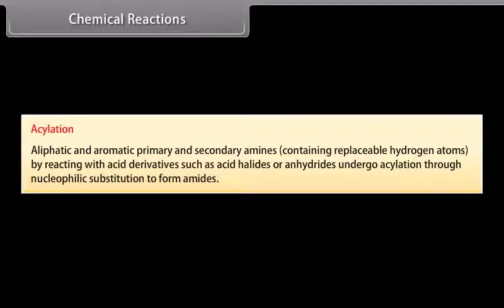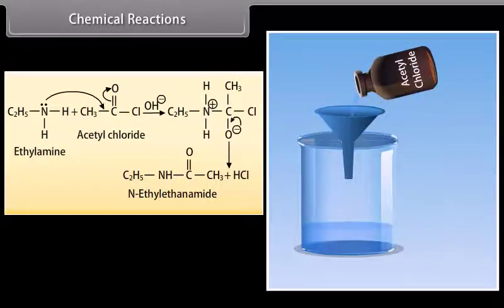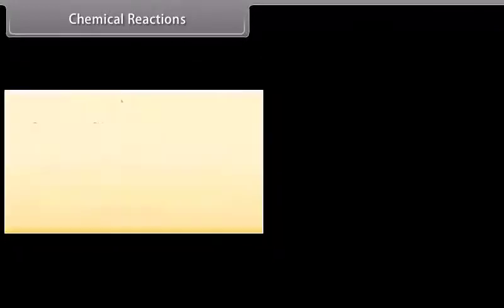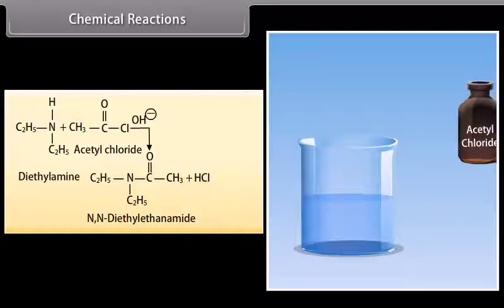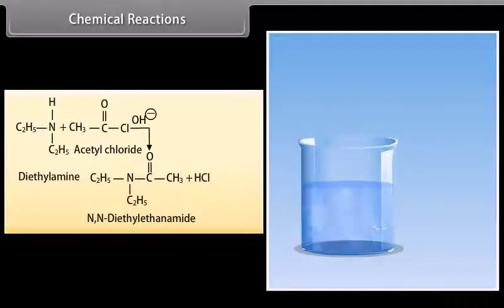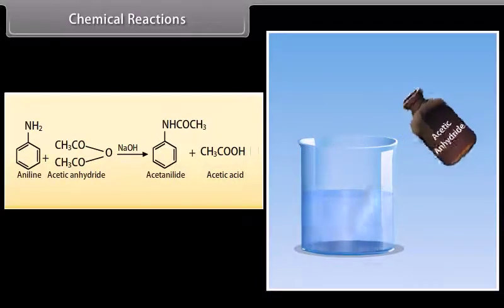Acylation: Aliphatic and aromatic primary and secondary amines containing replaceable hydrogen atoms react with acid derivatives such as acid halides or anhydrides to undergo acylation through nucleophilic substitution to form amides. Acetyl chloride reacts with ethylamine in the presence of a base to form N-ethylethanamide and hydrochloric acid. Acetyl chloride reacts with diethylamine to form N,N-diethylethanamide and hydrochloric acid. Acetic anhydride reacts with aniline in the presence of sodium hydroxide to form acetanilide and acetic acid.